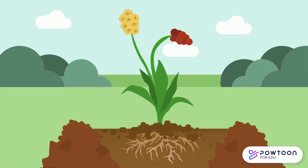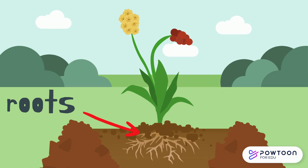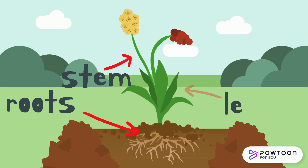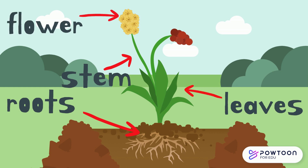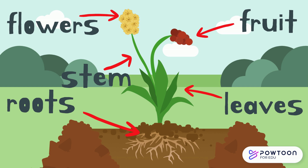Let's recap all the parts of a plant that we've learned about today: roots, stem, leaves, flowers, and fruits.